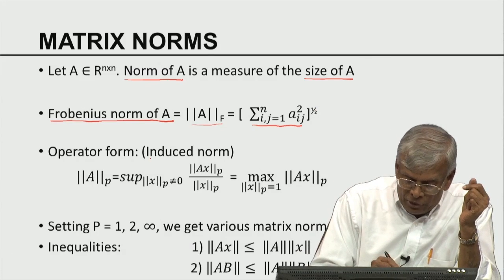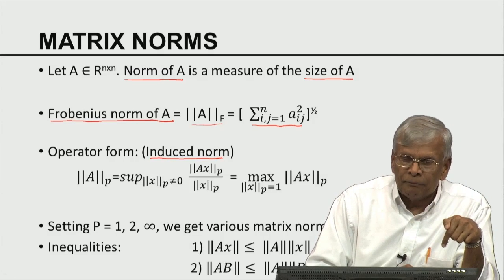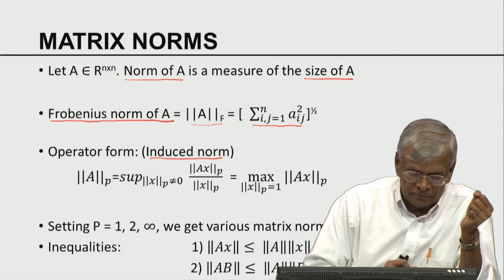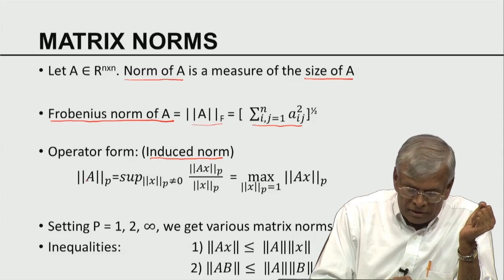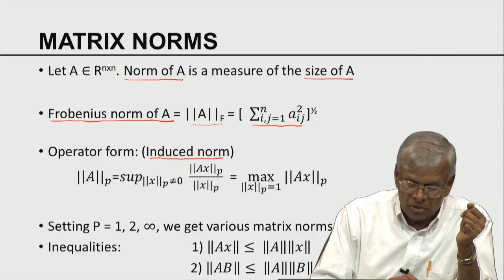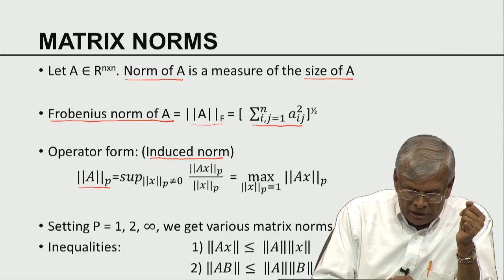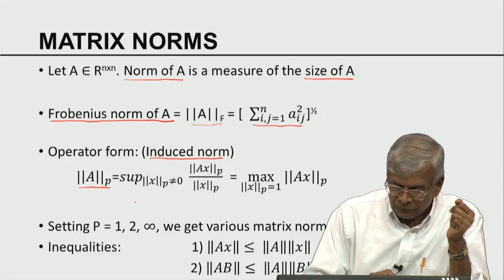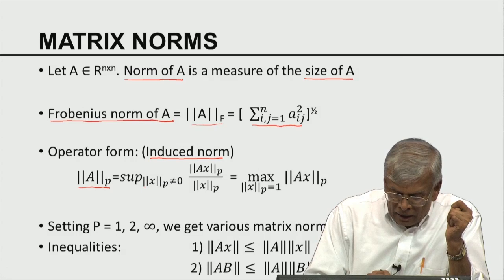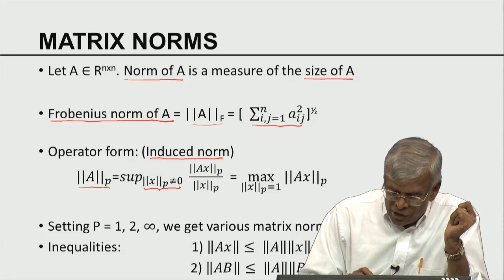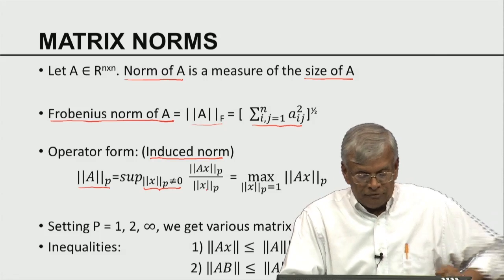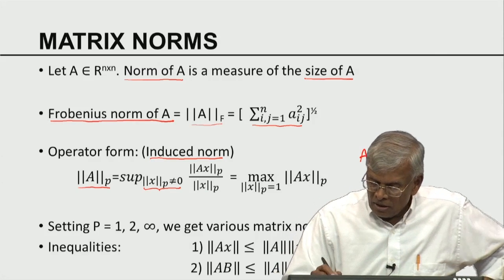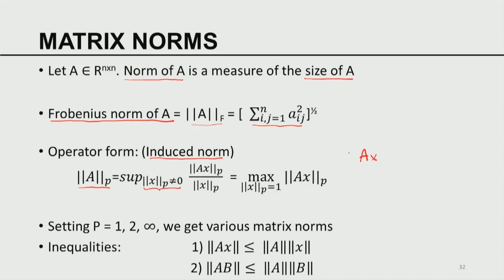There is another norm called the induced norm. These induced norms are defined using the notion of an operator. Let A be a matrix corresponding to a linear operator or linear transformation. The p-th norm of A, denoted ‖A‖_p, is defined by the supremum over all non-zero x of the ratio ‖Ax‖_p divided by ‖x‖_p. Given A, pick any arbitrary vector x; Ax is a vector; compute its p-norm and the p-norm of x, then compute this ratio.